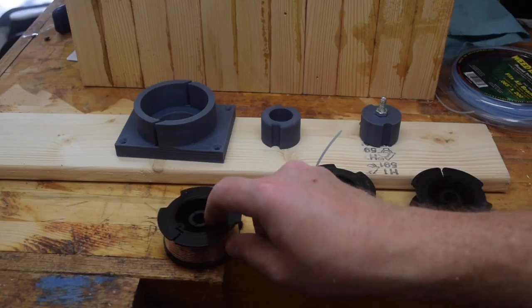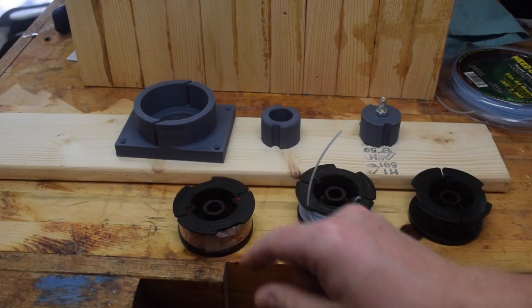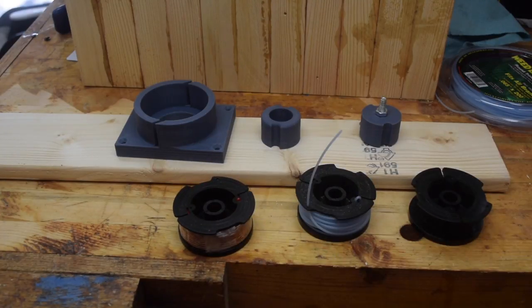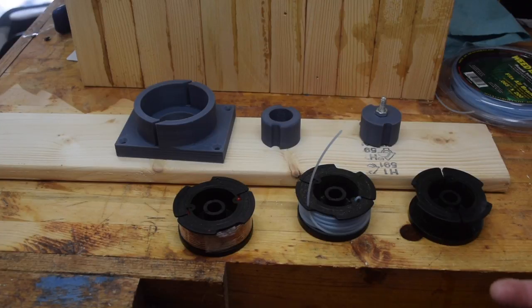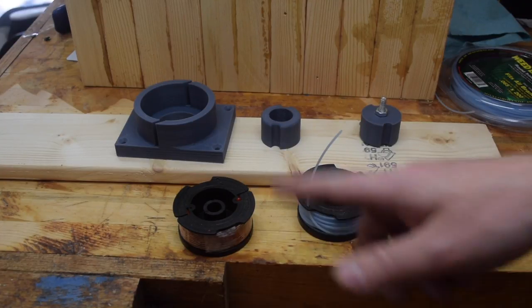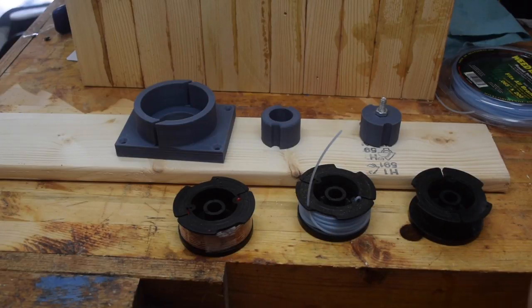You use a Black and Decker string trimmer which takes these cartridges. You can buy them already spooled up for about six dollars which isn't too bad, but honestly considering the amount of string that's on them it adds up.